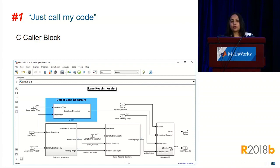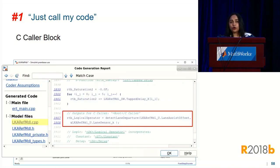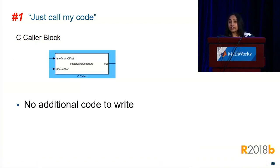You can see that when we configure the block, the ports are automatically created on the block. You hit the play button and it simulates. You generate code and you see that the Simulink model calls into the C code directly — and all of this without any additional code to write. You're not writing an S-function wrapper or TLC code to make this happen.